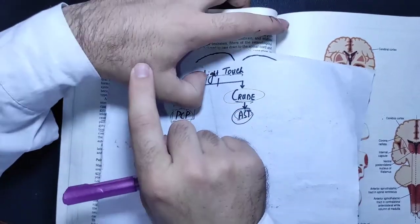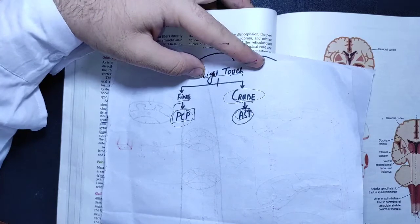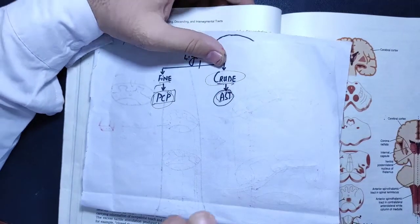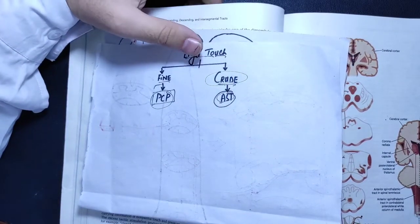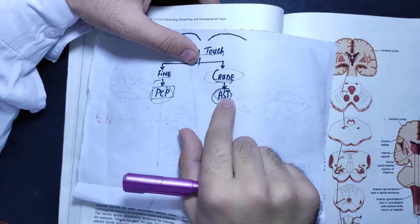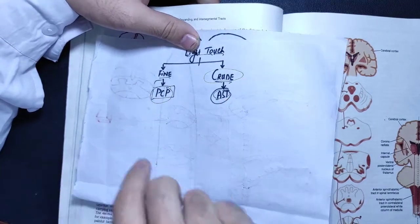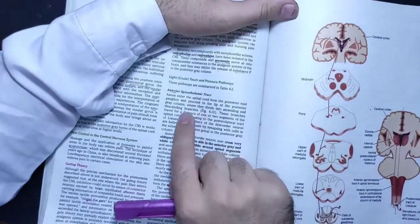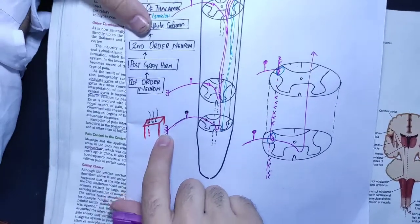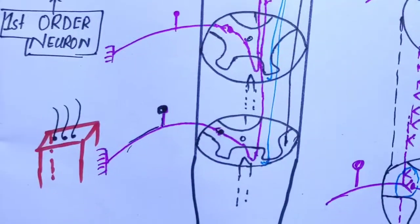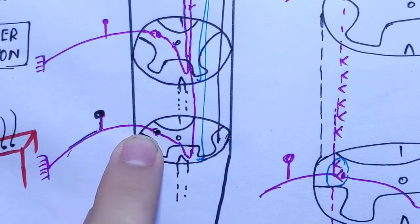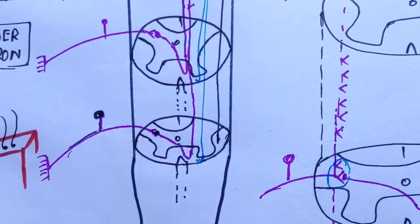We have a brain cortex. We have a hand in this way. If we have a soft cotton and we touch it, then we involve the brain cortex. This happens in the substantia gelatinosa.